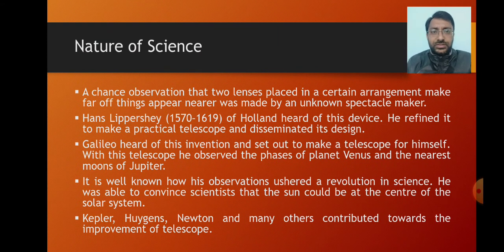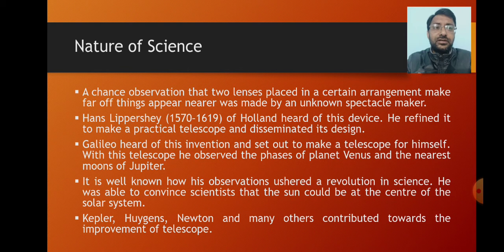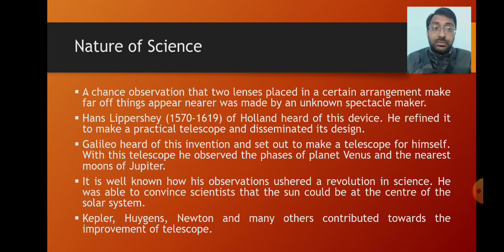You all must have heard of the telescope. Chalo aaiye ek rochak kissa jaante hain ki telescope ki discovery kaisi hui. It was a chance observation — ek chashmaa banaane waale ki — a chance observation that two lenses placed in a certain arrangement make far-off things appear nearer. Ek spectacle maker ne by chance dekha ki jab usne do lenses ko kuch arrangement mein rakha, to door ki chizein usse paas nazir aane lagi. Is idea ka pata laga Hans Lippershey ko, jo 1572 se 1619 tak Holland ka scientist tha.